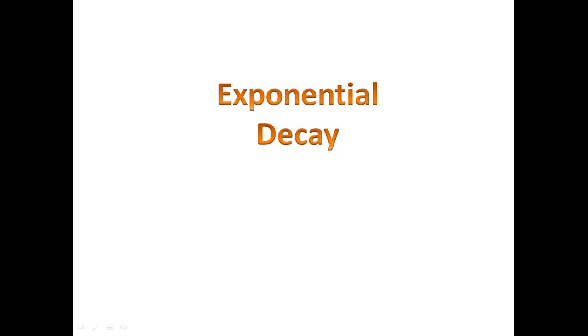In this lesson, we're going to take a look at some examples of exponential decay. Exponential decay is when you have something that decreases in quantity at a percentage each period, for example, the half-life of a radioactive element.